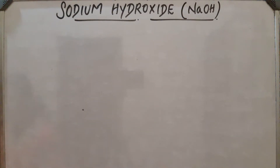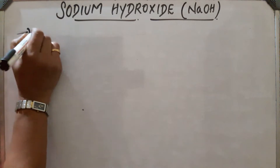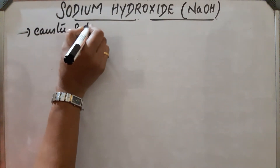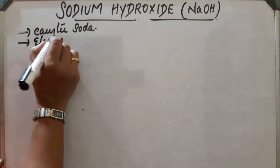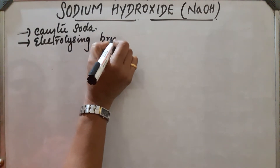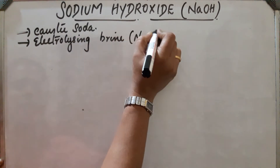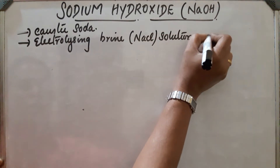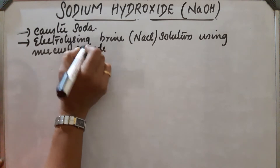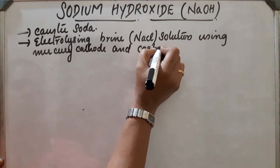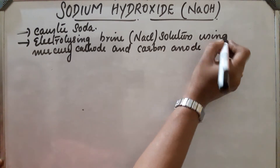Sodium hydroxide or NaOH is also called caustic soda. NaOH is manufactured by the electrolyzing of brine solution or NaCl solution using mercury cathode and carbon anode in a cell called the Casner Kellner cell.